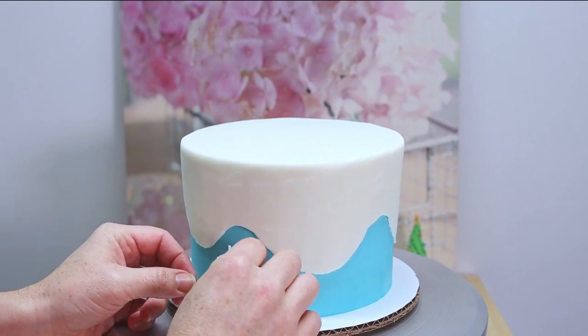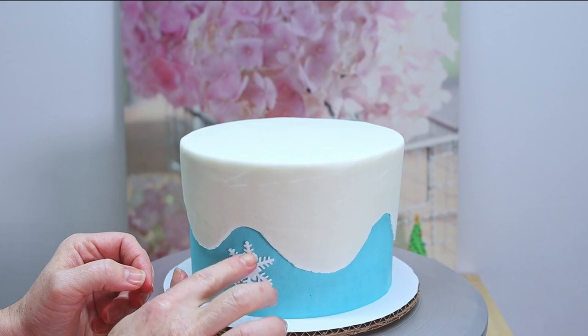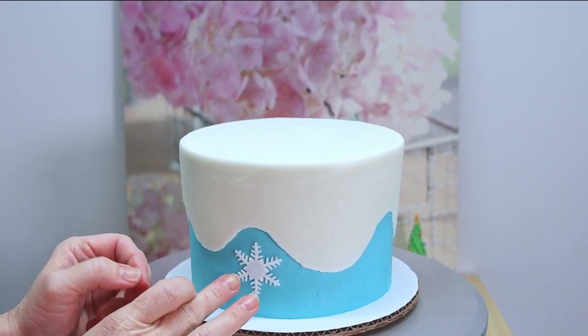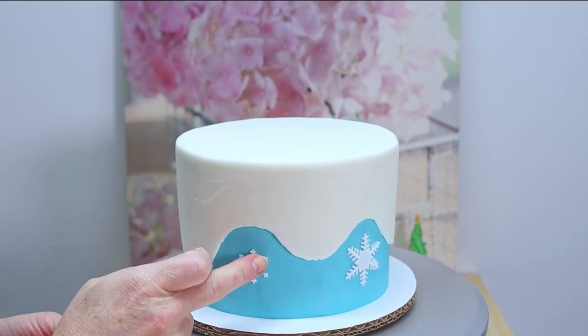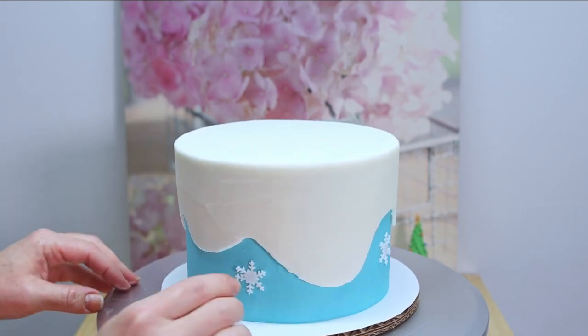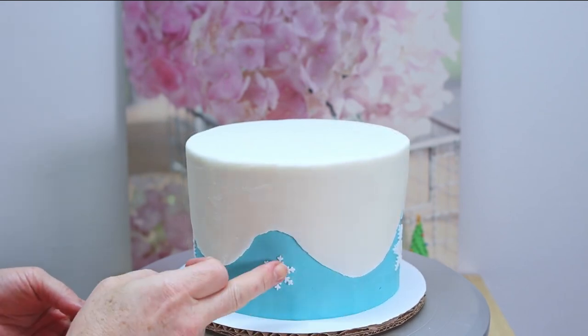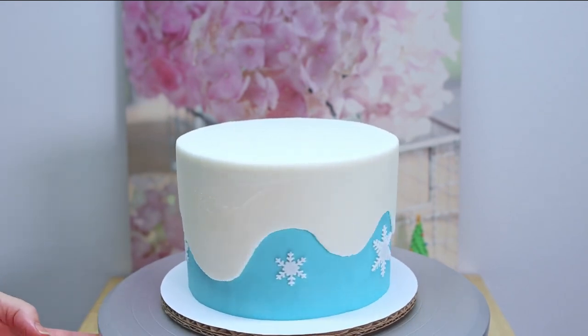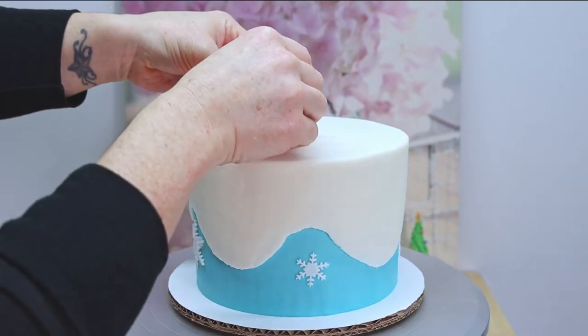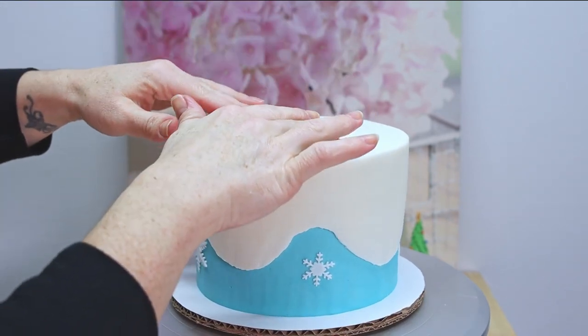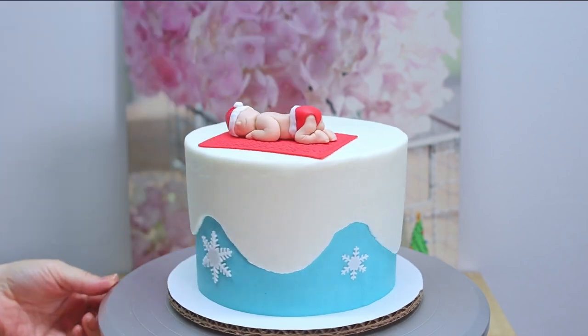We are now ready to decorate our cake. So we are going to start with our snowflakes first and we're just going to apply these randomly all around the bottom of our cake on that blue buttercream. Now we're just going to give our cake a little spin and figure out where we want that front to be, and then we're going to lay our little Santa baby down for a nap on his blankie.